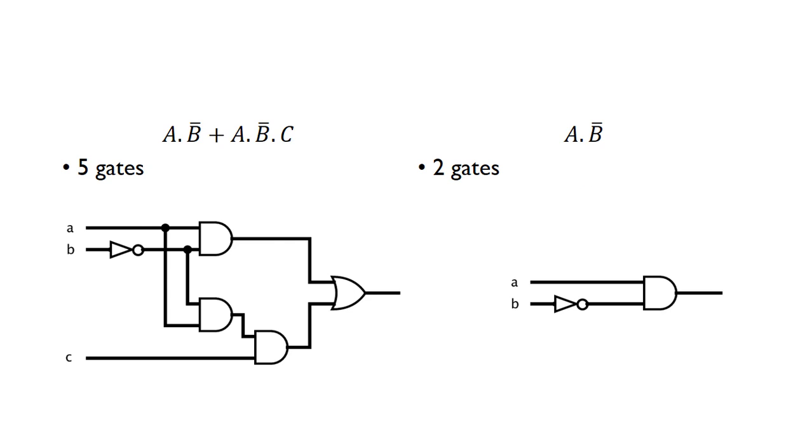Looking at it in terms of gates, you can see if you've built that circuit, you need 5 gates to build that - 5 gates and 3 inputs. By simplifying it, this is the simplified version. We've got rid of this entire part of the circuit. It's very important to do minimization when we can to get simpler circuits.